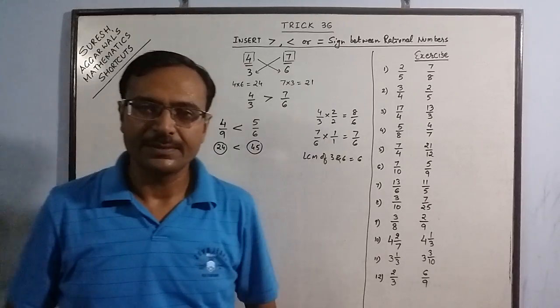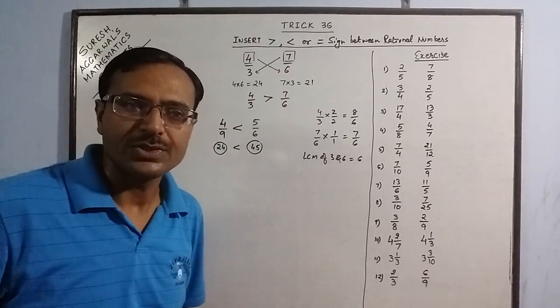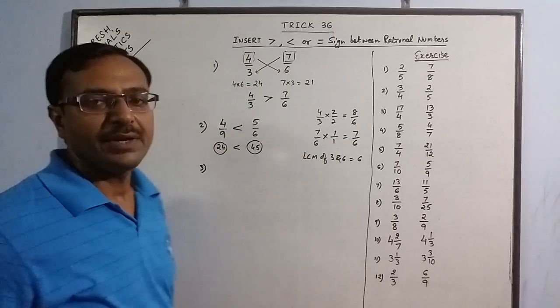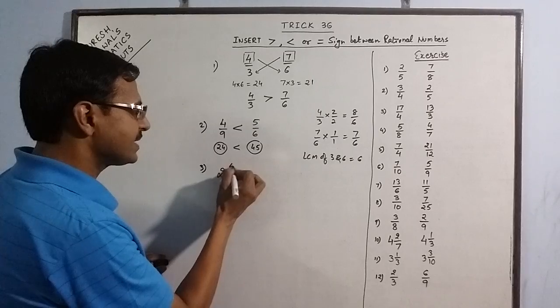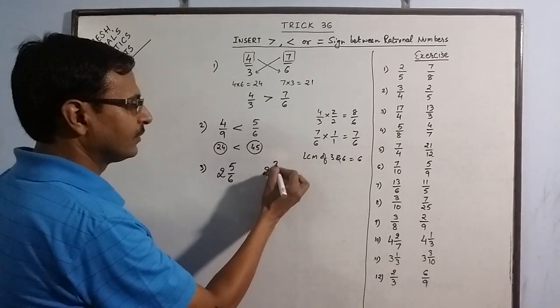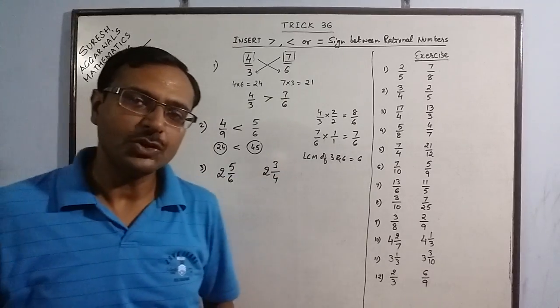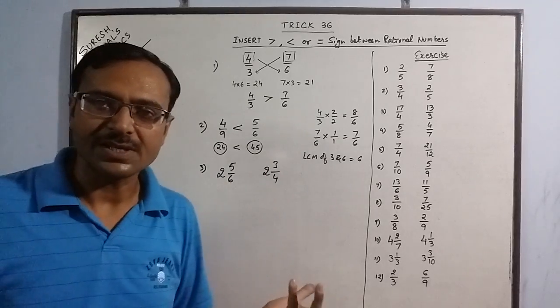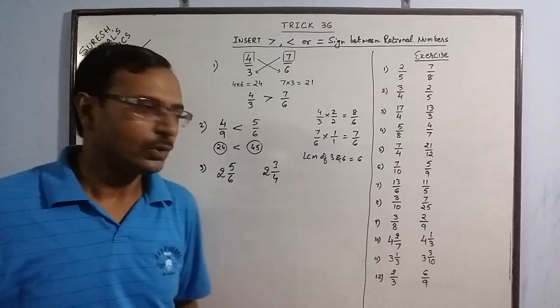Now coming to mixed fractions. In case of mixed fractions you can follow the same procedure. Say we have to compare 2 5 by 6 with 2 3 by 4. Obviously when there is a comparison between two mixed fractions, the first number 2 will be same in both, otherwise it is automatically known which is greater. So we just compare 5 by 6 and 3 by 4.